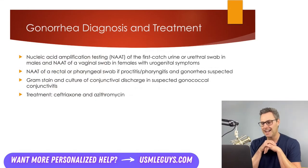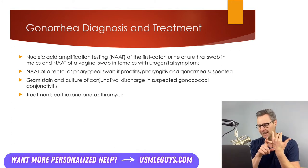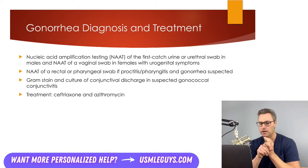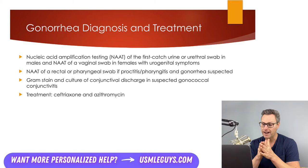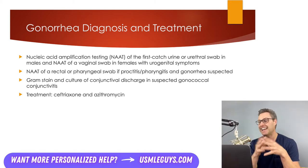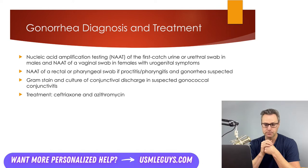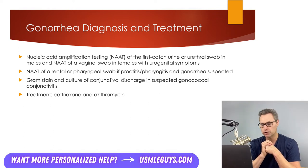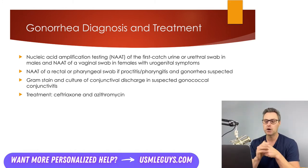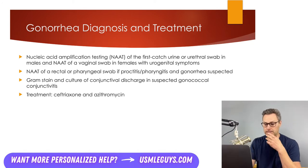Gonorrhea can be diagnosed with nucleic acid amplification testing of the first-catch urine. As with chlamydia, we can also do a urethral swab in males or a vaginal swab in females. NAAT can also be performed on rectal or pharyngeal samples if proctitis or pharyngitis from gonorrhea are suspected. Gonorrheal conjunctivitis is diagnosed with a gram stain and culture from the conjunctival discharge. Treatment of gonorrhea is ceftriaxone plus azithromycin.